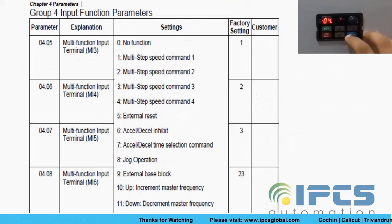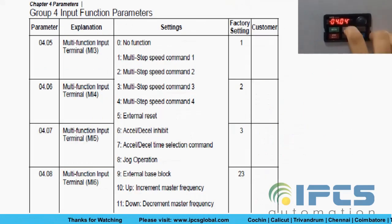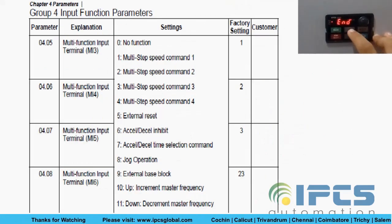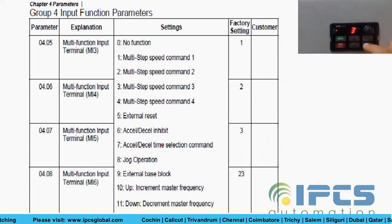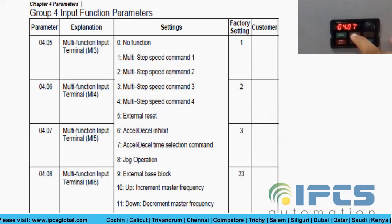In group 4, the input function parameter can be changed to multi-step speed command.